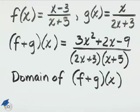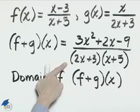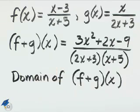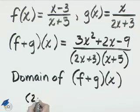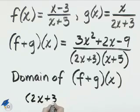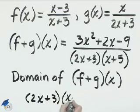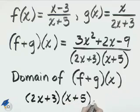We have the sum of f plus g of x. Now we need to find the domain of f plus g of x. Remember, the domain will be all real values, except what makes that denominator equal to 0. So if we set the denominator equal to 0 and solve, we'll be able to find whatever is excluded from the domain of the function.